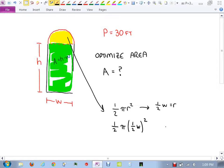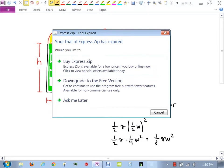So using the fact that one half w equals r, what I can say here is that this formula would be one half pi times one half w squared. The reason why I'm trying to get it in terms of w is because I want as few variables as possible. So this will be one half pi times one fourth w squared, which is one eighth pi w squared.